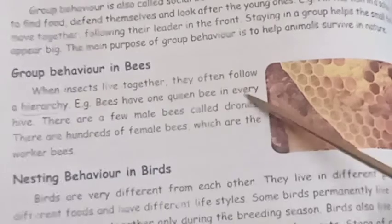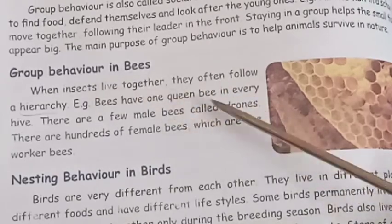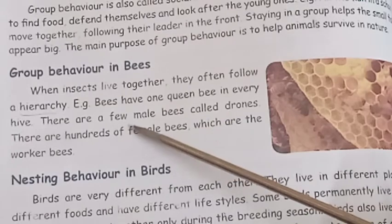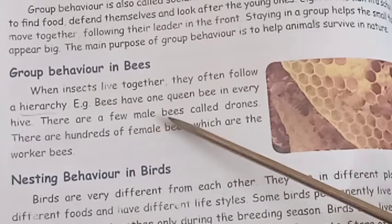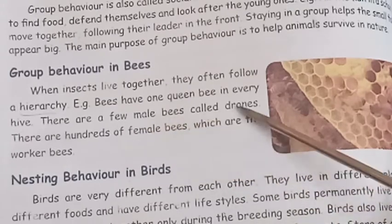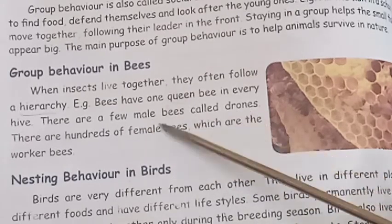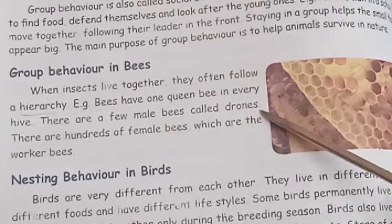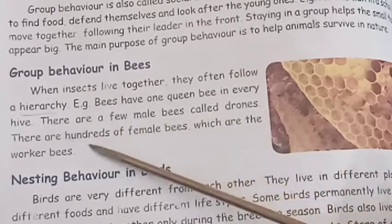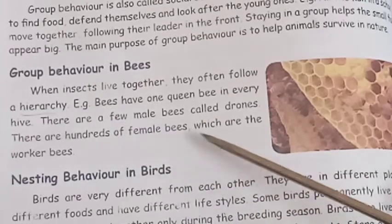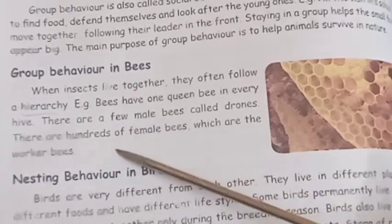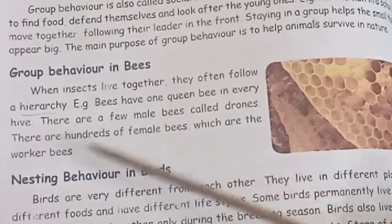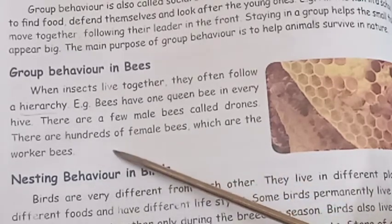There are a few male bees called drones. There are hundreds of female bees which are the worker bees. The female queen bee is one of them.